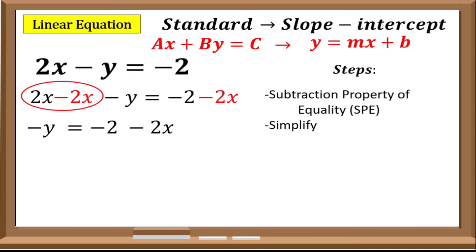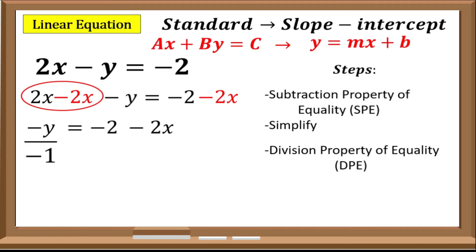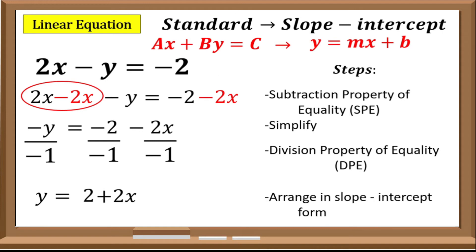Since the numerical coefficient of y in slope-intercept form is positive 1, we will be eliminating the negative. To do that, we will be using the division property of equality. So that is negative y divided by negative 1, negative 2 divided by negative 1, and negative 2x divided by negative 1. That gives y equals 2 plus 2x. Arranging into slope-intercept form, the slope-intercept form of 2x minus y equals negative 2 is y equals 2x plus 2.